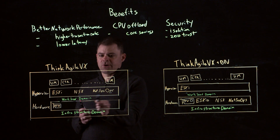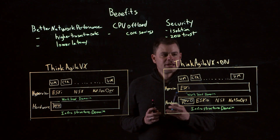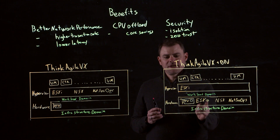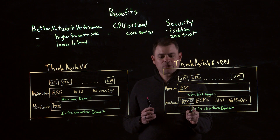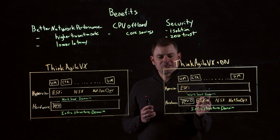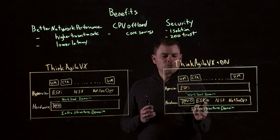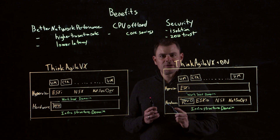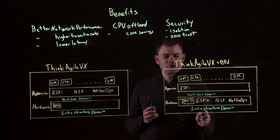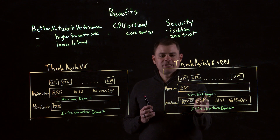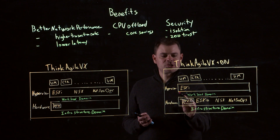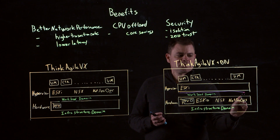Also, from a security perspective, all of this is running in your hypervisor layer. Now, if we take a look at Think Agile VX with a DPU, the difference is that the DPU is going to be running on your network card, or sometimes referred to as a smart NIC. Because this is a system on a chip, we're able to run ESXiO — a lightweight version of ESXi — and run NSX and your network security operations directly on the DPU in your infrastructure domain. Then only ESXi will be running on your hypervisor or the workload domain. This also provides an isolation layer from a security perspective between the two.